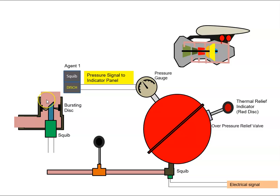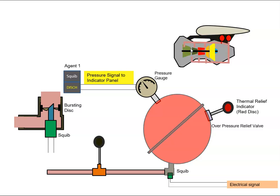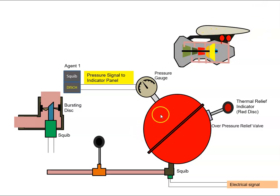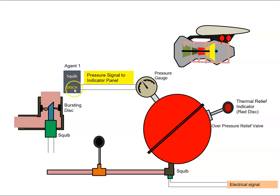Once power is sent to the squib, it punctures the bursting disk, which allows all the extinguishing agent to go out through the piping and into the engine. As the extinguishing agent goes into the engine, the pressure inside the bottle will decrease, and that will send a signal back to the overhead panel indicating that the extinguishing has been discharged.